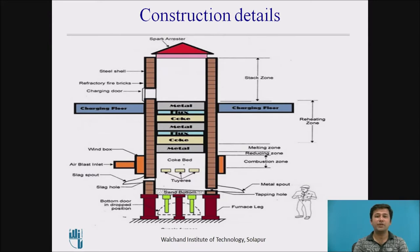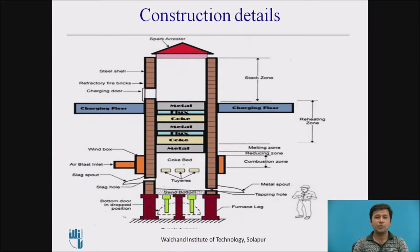There is a spark arrestor placed at the topmost position. The charging door, which can be seen on both the right and left sides of the figure, is where the furnace is charged. Two tuyeres, shown in orange color, are placed to blast air into the furnace. This is a very simple kind of furnace used for melting practices.